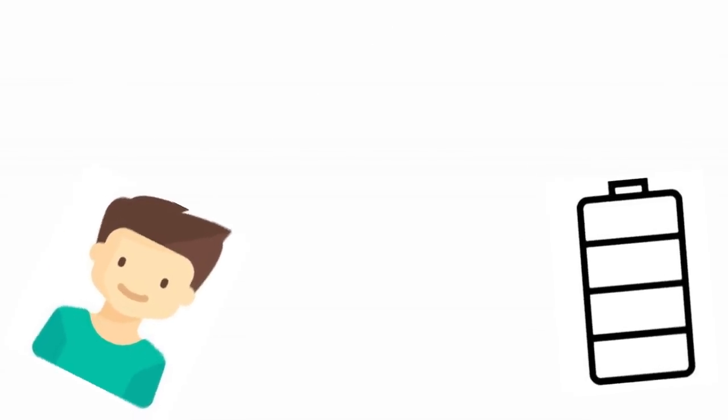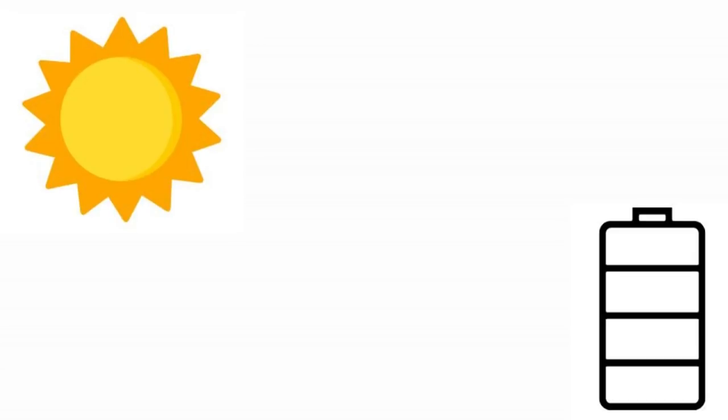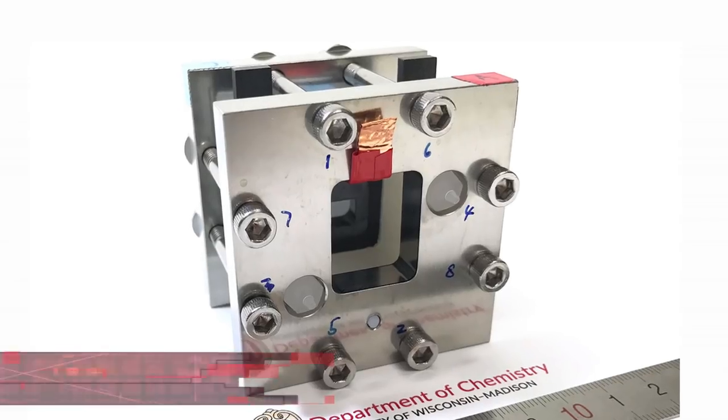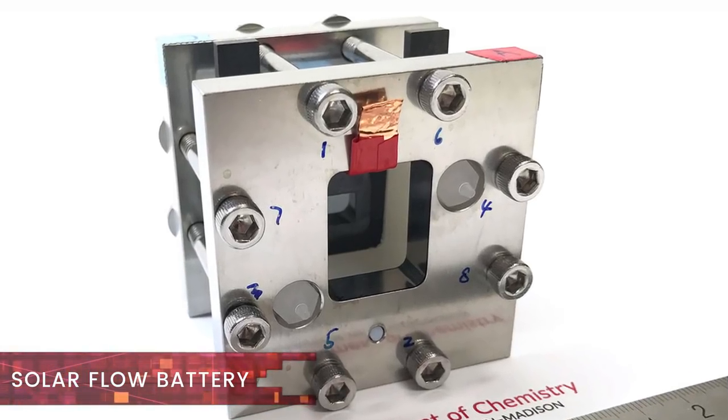You may remember the time from your childhood when you thought placing your alkaline non-rechargeable battery in the sun for a few hours might give it some extra juice. While that was more of a myth, solar flow batteries are not.